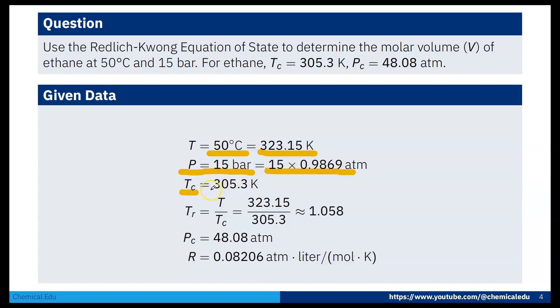Tc, the critical temperature, is given in the question. Then Tr equals T over Tc, so we get 1.058. Pc is 48.08 atm, and R is the universal gas constant 0.08206 atm liter mol kelvin.